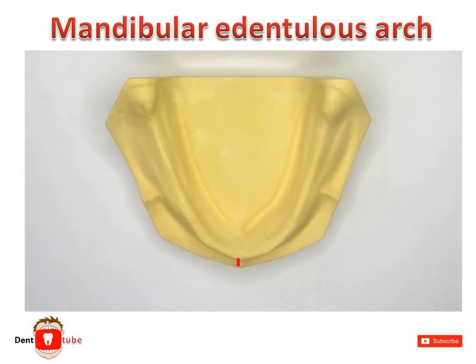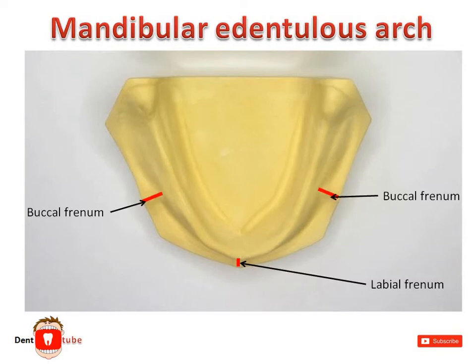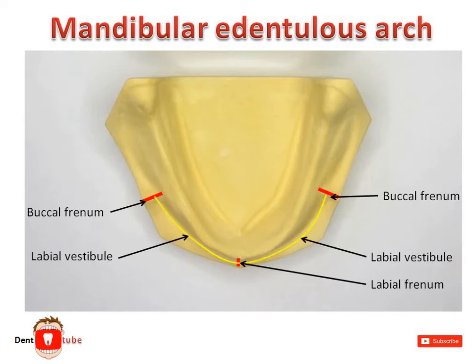A fibrous band similar to that found in the maxilla towards the lip is the labial frenum. A similar kind of fibrous band on the buccal side is the buccal frenum. The space between the residual alveolar ridge and the lips is the labial vestibule. A similar kind of space on the buccal aspect is the buccal vestibule.